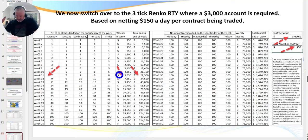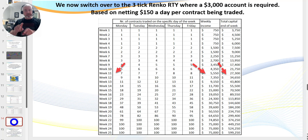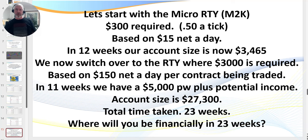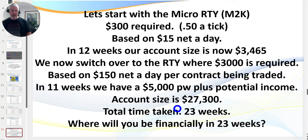After a further 11 weeks from when you go live with $3,000, you potentially have an income of over $5,500 a week with an account size of around $27,000. This is a realistic plan. The spreadsheet you can download below along with the training video. Here's the bottom line: start on the micro, trade on the simulator until you've got the setups right. Within 12 weeks your account size is $3,500. Within 23 weeks from going live, you have a potential income of $5,000 plus per week. That is the true potential of this business if you treat it as a business.